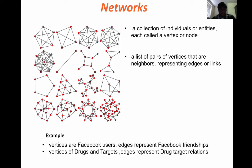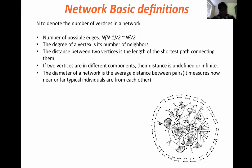What a network is — it's a collection of individuals which are connected by some relations, and those connections are called edges. For example, vertices for Facebook users connected to friends by the friendship relation. Also, for example, you have drugs and targets, so drugs connect to targets using that interaction value. This is how you can represent a network.